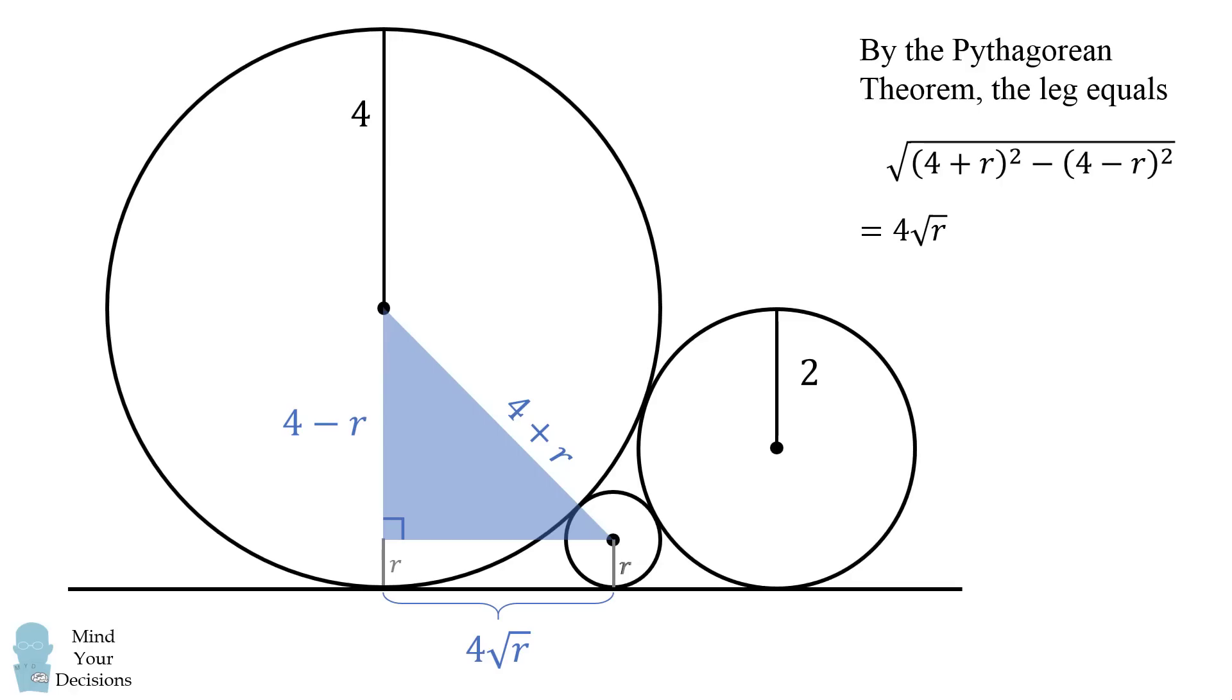Now we can do a similar thing with the other circle that has a radius of 2. Its hypotenuse will be 2 plus r. One of its legs will be 2 minus r, and we can solve for the length of the other leg using the Pythagorean theorem. It'll be a similar calculation, and we'll get this as 2 times the square root of 2 multiplied by the square root of r.